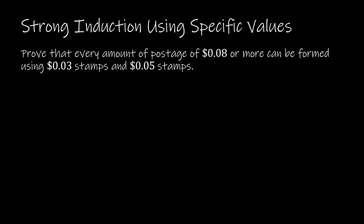So let's think about 8, 9, 10, 11, 12, 13 cents in terms of 3-cent and 5-cent stamps. For 8 cents, I could use one 3-cent and one 5-cent stamp. For 9 cents, I could use three 3-cent stamps and no 5s. For 10 cents, zero 3-cent and two 5-cent stamps. For 11, two 3-cent and one 5-cent. For 12, four 3-cent and zero 5-cent. For 13, one 3-cent and two 5-cent stamps.